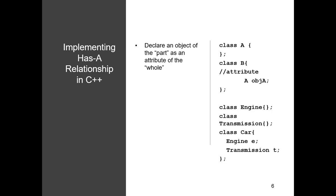From an implementation point of view, there is no difference between composition and aggregation — they look the same. The key expectation is that you can clearly differentiate between is-a and has-a relationships and implement both. There is one tricky part to be aware of when using pointers in has-a relationships.